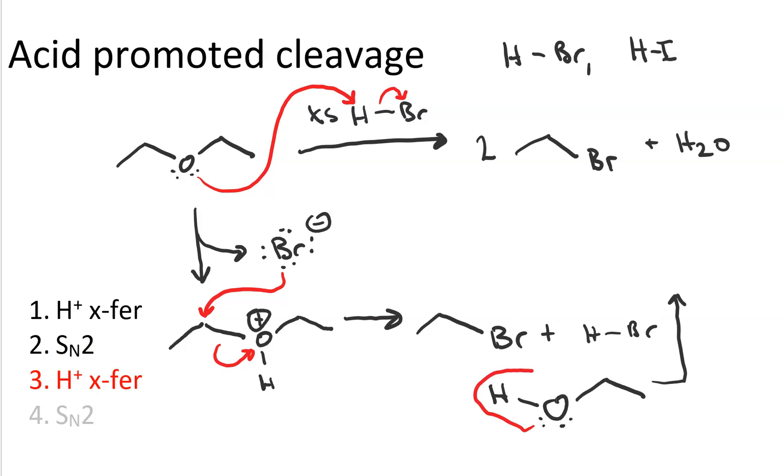The ethanol produced then does proton transfer, taking a proton from another equivalent of the acid. This is why we need excess acid. This kicks out yet another bromide ion and makes the protonated alcohol.